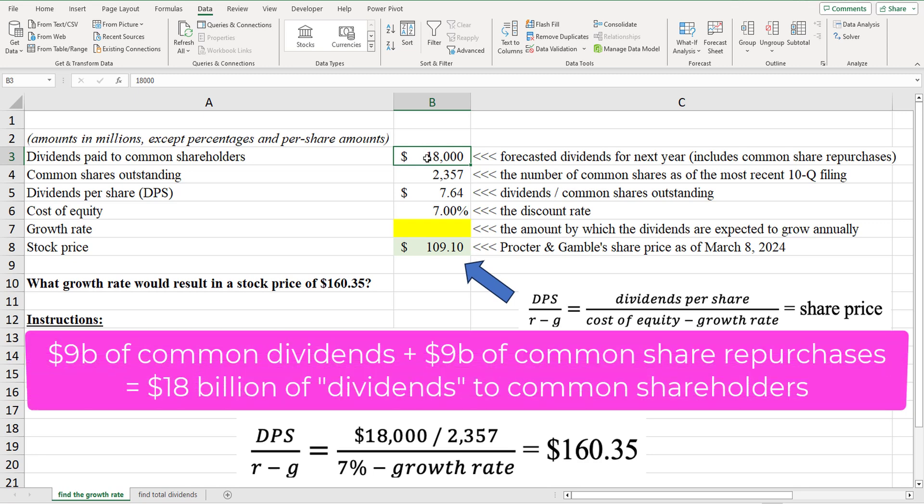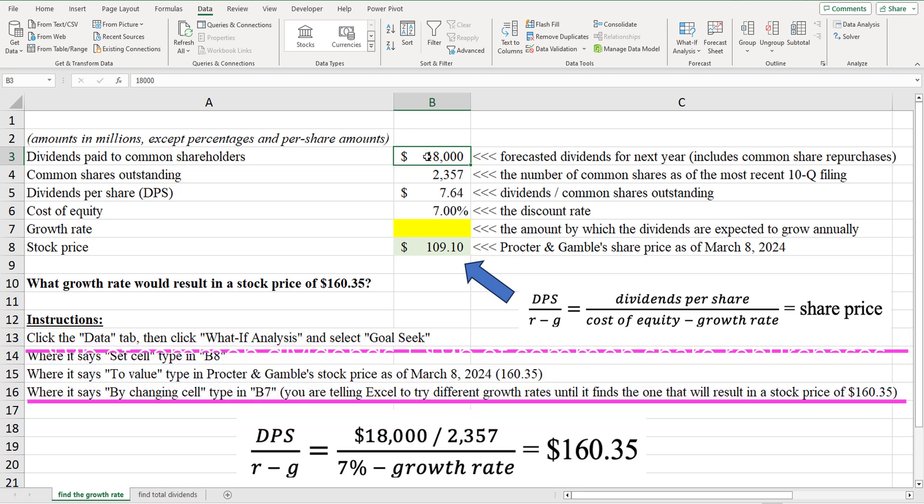If you're not familiar, common share repurchases are usually included as distributions to common shareholders when doing dividends-based valuation. Don't worry about the details. I've got other videos on that. In any event, let's assume $18 billion of distributions to common shareholders.